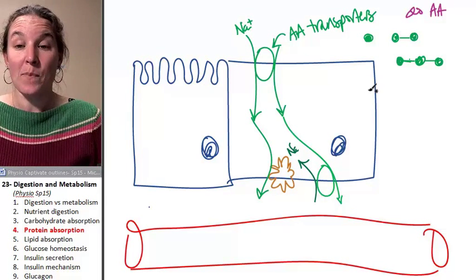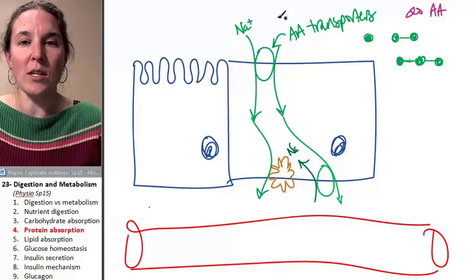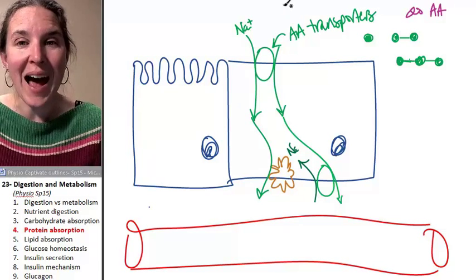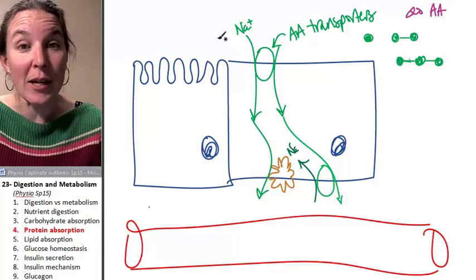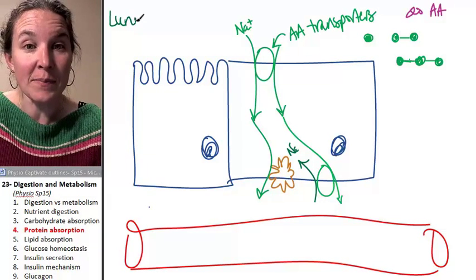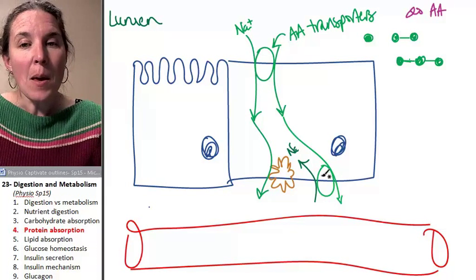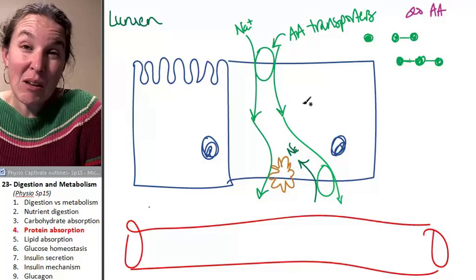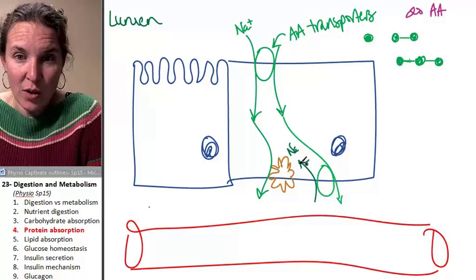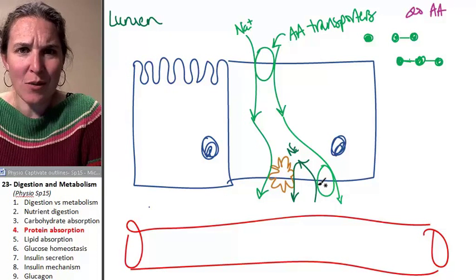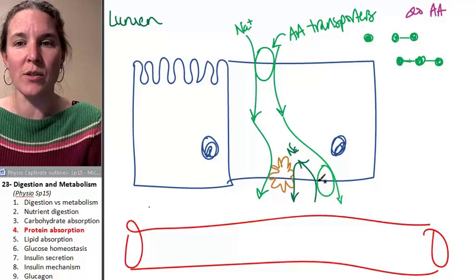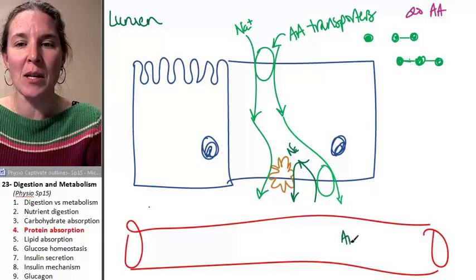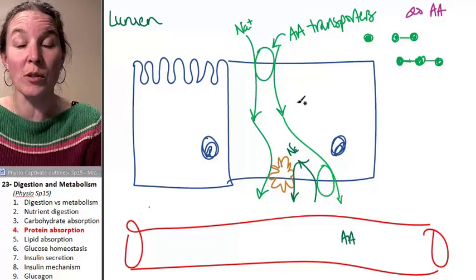Either way, obviously, we wouldn't want to be putting sodium out into the lumen of our intestine. But allowing sodium back in, down its sodium gradient, and then pumping it back out again through the sodium potassium pump. Awesome. We can totally do that. And that allows amino acids to get absorbed from the lumen.